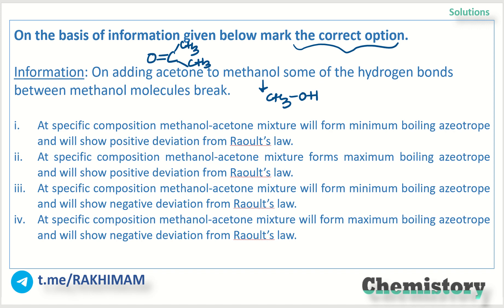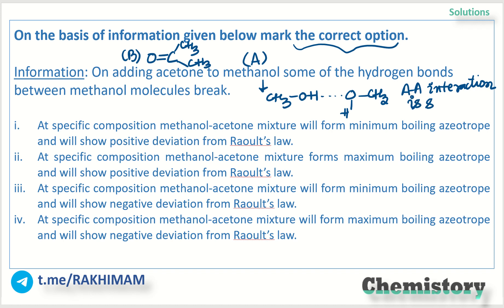Methanol is an alcohol, so hydrogen bonding is present here. If I represent methanol as A and acetone as B, methanol has good self-interaction — AA interaction is strong. Similarly, BB interaction is also strong individually. But when I add acetone to methanol, the hydrogen bonds break.